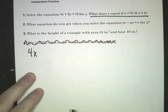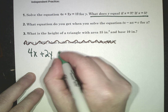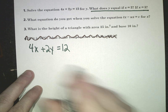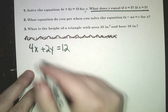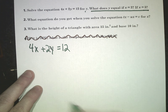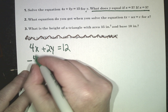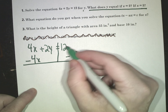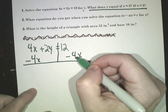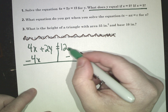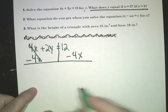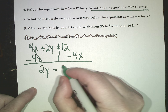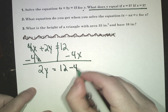I've got 4x plus 2y equals 12. Now I've got to solve it for y — get y by itself. Normally I do addition and subtraction first, so I'm going to subtract 4x from both sides. I can't combine 12 and negative 4x because they're not like terms — there's no x here. So this goes to 0, and I have 2y equals 12 minus 4x.